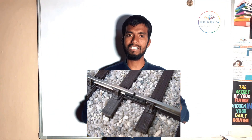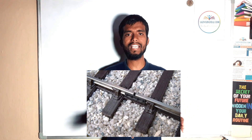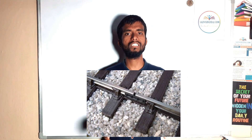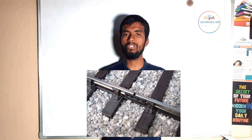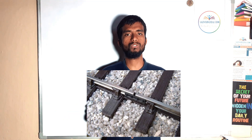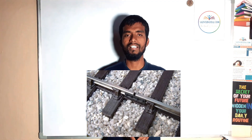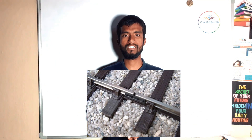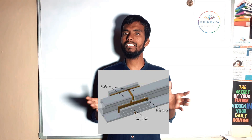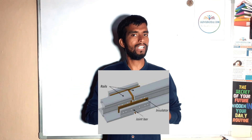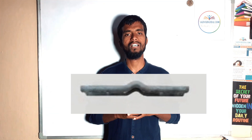Have you ever wondered why there is a gap between the rails of a railway track? It is to protect the rail when it is subjected to heat. In summer, due to high temperatures, the rail may expand. If there is no gap between two successive rails, those two rails will merge into a single one. To avoid these kinds of accidents, a gap is left between two rails of a railway track.